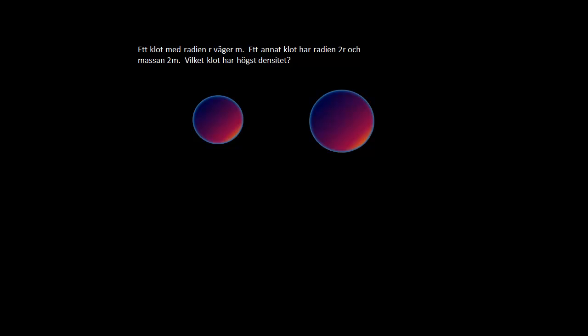We have one sphere that has radius r and mass m. That will be that guy. Then we have another one that has radius 2r and mass 2m. Kind of looks like fried eggs doesn't it? Weird eggs.